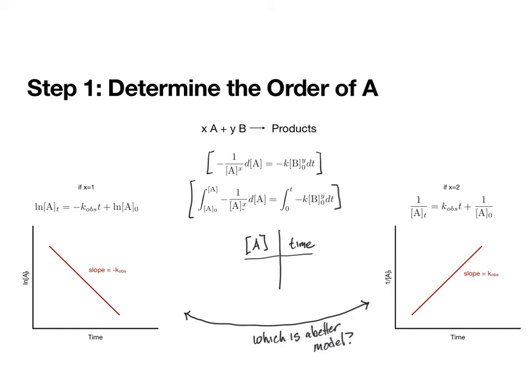And the better model is the one with a better fit of the data to the model. And so to do that, we say, well, what if X equals 1? Well, if that's the case, we get this integrated rate law. And so if you notice, that means that we graph different things on the y-axis. And this time, I'm calling the slope K observed, because really it is going to be equal to K times B initial raised to some power, and we don't know what that power is yet. But that power is going to be the same. And so we can say that power is going to be constant over the course of the reaction. And so really, we can think about the slope as sort of a combined K term or K observed.